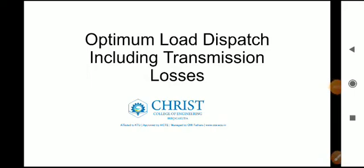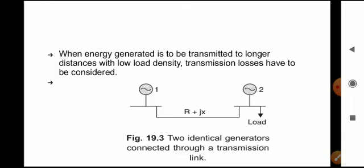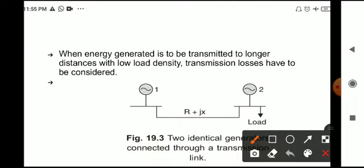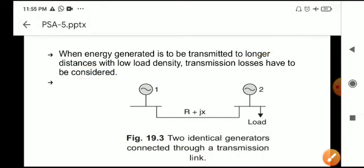Welcome to another video on system analysis based on KTC bus. We are on module 5 and today we are going to discuss optimum load dispatch including transmission losses. In the previous video we discussed optimum load dispatch neglecting transmission losses. Today we are going to consider transmission losses, because when energy from a generator is to be transmitted to longer distances with low load density, transmission losses have to be considered.